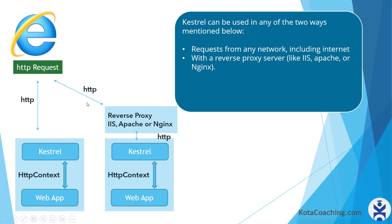But if you are using IIS, Apache, or Nginx as a reverse proxy server, then the HTTP request is received by the reverse proxy server first. Then it follows the same pattern — IIS will send this request to Kestrel, Kestrel will compose the HTTP context and then send it to the web application. And in the reverse process, it follows the same path.